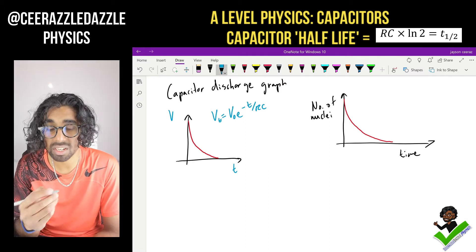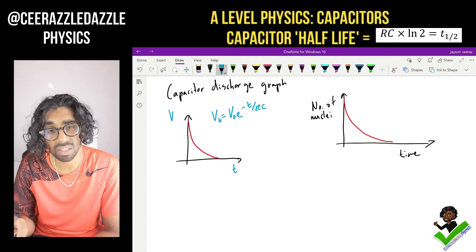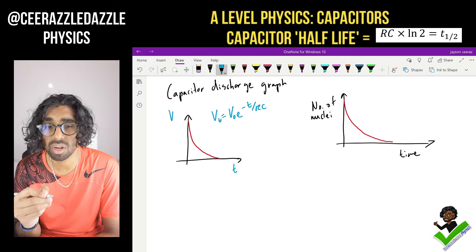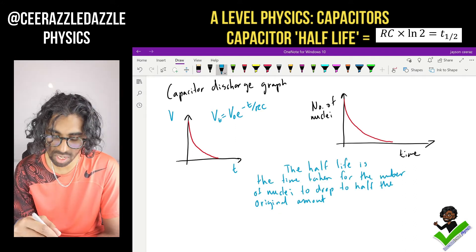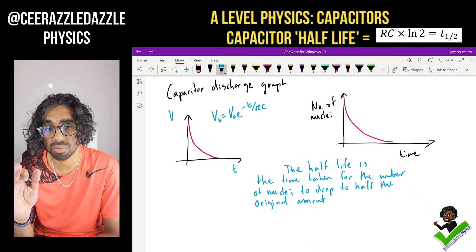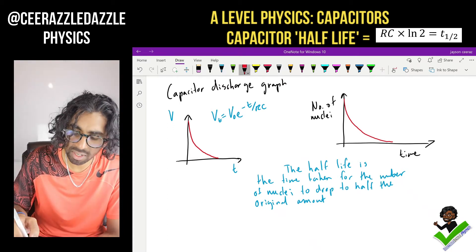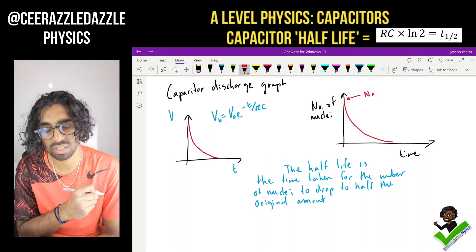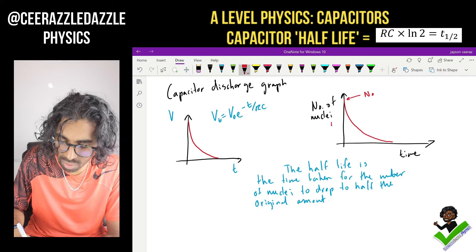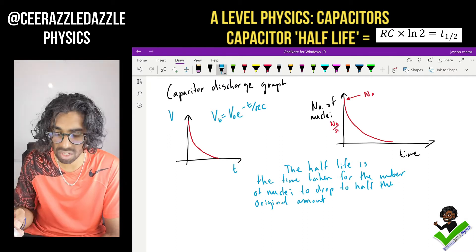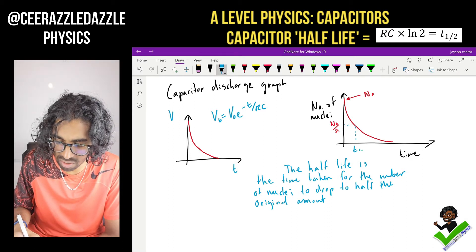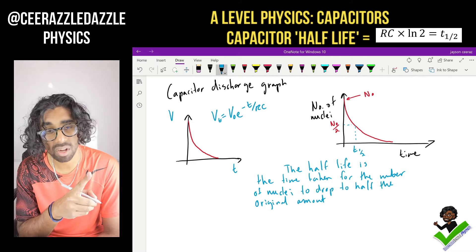In the radioactivity topic we talked about the idea of the half-life. The half-life is the time taken for the number of nuclei to drop to half the original amount. So what does that look like on my graph? Well, at the start this value is n naught — that's the initial amount of nuclei. The half-life is when we look at n naught over 2, and then look at the corresponding time value — that will be the half-life, t subscript half.